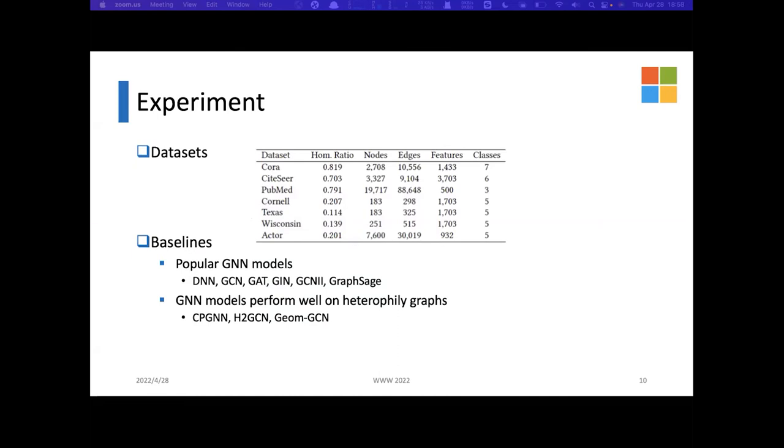Then we conduct the experiments on seven datasets from PyTorch Geometric which are commonly used in graph neural network literature. The statistics of the datasets are in this table. We can judge from the homophilic ratio that Cora, CiteSeer, and PubMed are homophilic graphs, while Cornell, Texas, Wisconsin, and Actor are heterophilic graphs.